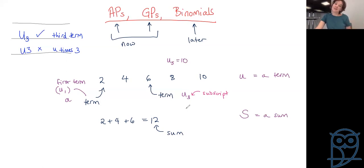If we can do it for terms, there must be some way of doing it for sums, and it's exactly the same. Instead of saying the sum of three terms, we would say capital S3, a subscript. This is your sum of three terms. So u3 is your third term, S3 is your sum of the first three terms. If we add all of this together, we would have S5 equals 30.